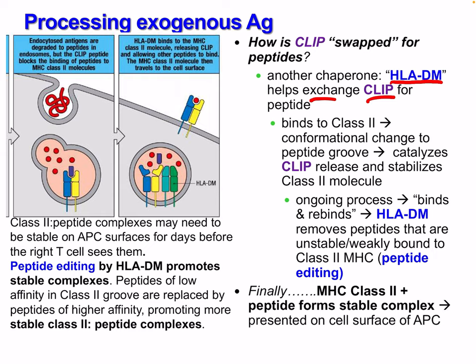Another chaperone called HLA-DM helps exchange CLIP for the antigen peptide. HLA-DM binds to class 2, causing a conformational change in the peptide groove, releasing CLIP, and catalyzing stable class 2 molecule formation. This is an ongoing process — HLA-DM binds and rebinds, removing peptides that are unstable and weakly bound to class 2 MHC. This is essentially peptide editing: whatever peptide binds best continues until we have optimal binding. Finally, MHC class 2 and the peptide form a stable complex and this is presented to the surface of the APC.